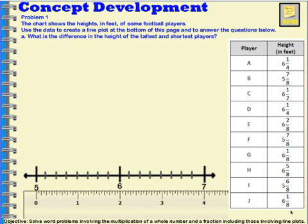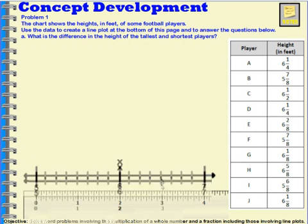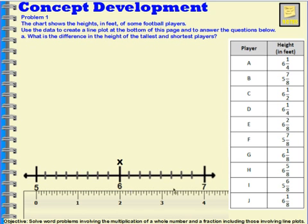We did a lesson once before on line plots, but with this lesson our numbers are a little larger. We'll use the same process. I'm going to look at Player A's height: six and one fourth. I'll take an x and bring it to the six and one fourth spot on my number line. I count eight spaces between my six and my seven. I knew I'd be dealing with eighths because I looked at the denominators in the data. So I split the space between my numbers into eight parts. Knowing that this is eighths, I know it takes two eighths to make one fourth.